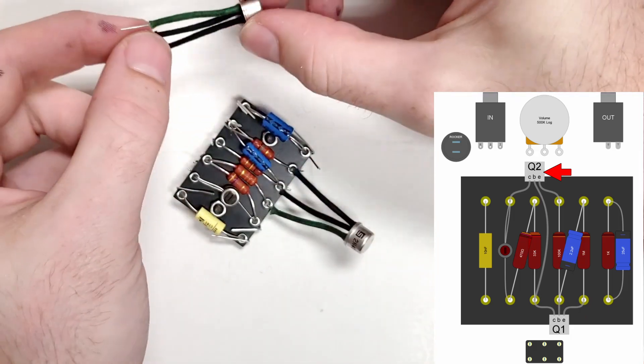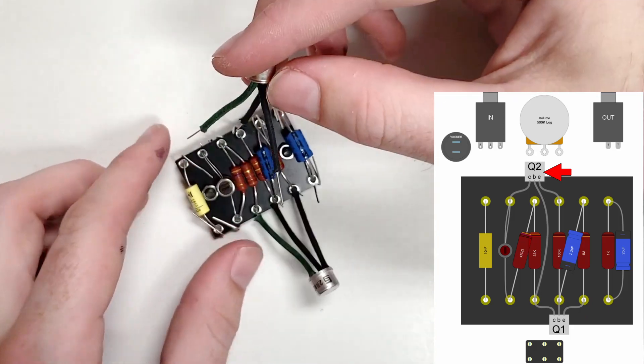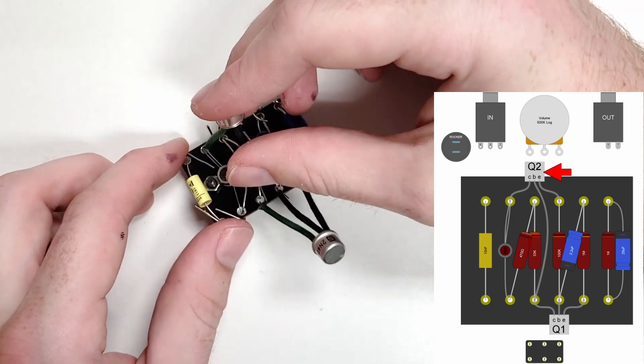In this layout, one of the leads of transistor Q2 extends across the board, so we form the leads as well as we can before installing.